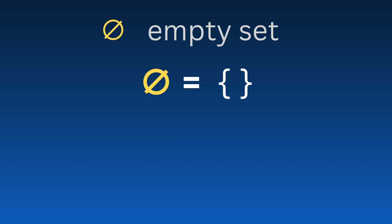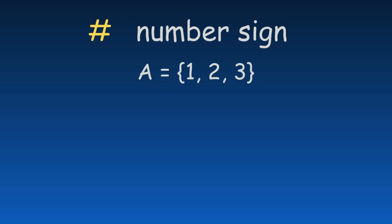The empty set symbol represents a set with no elements. The number sign, also called octothorpe or hashtag, often shows the cardinality of a set, which means the number of elements it contains. The in symbol means that something belongs to a set, while the not in symbol shows that an element is not part of the set.